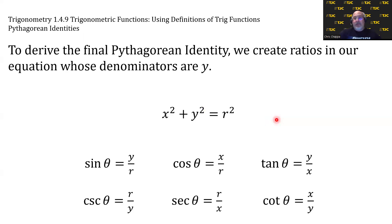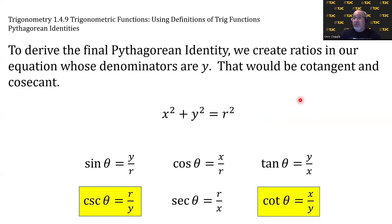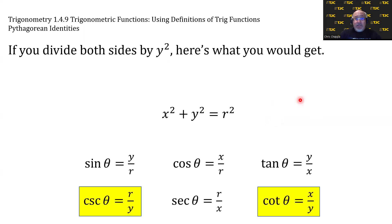To derive the final Pythagorean identity, we create ratios in our equation whose denominators are y. And which trig functions are those? You got it? Cotangent and cosecant. If we divide both sides by y², think about what would happen. The y² would become one. The x²/y² would become cotangent squared. The r²/y² would become cosecant squared. And it would look like this.